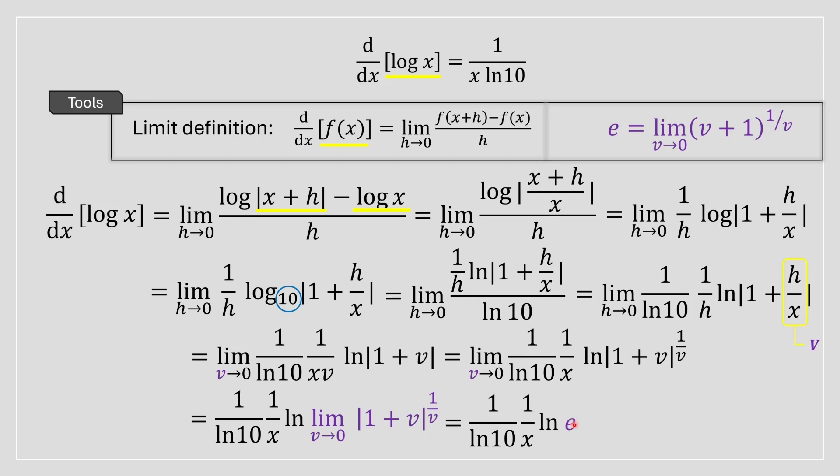Taking the ln of the Euler's number will just be equal to one, and what you're really going to be left with here is one divided by x ln of 10. And that's why the derivative of log of x is equal to one divided by x ln of 10.